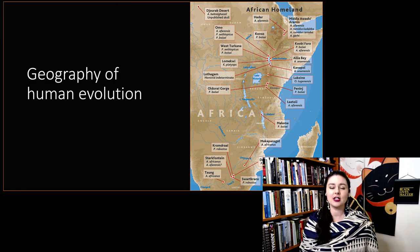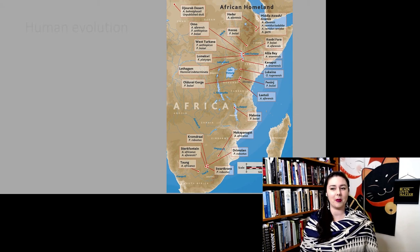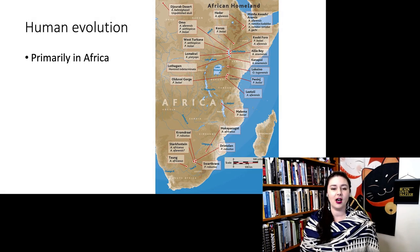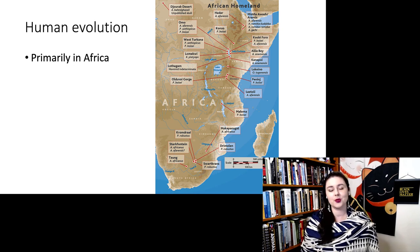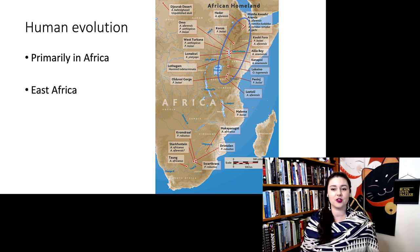Let's start with the geography. As you can see here, human evolution happens primarily in Africa. The two most common places we're going to talk about are East Africa, there's a bunch of sites up here, and then South Africa.